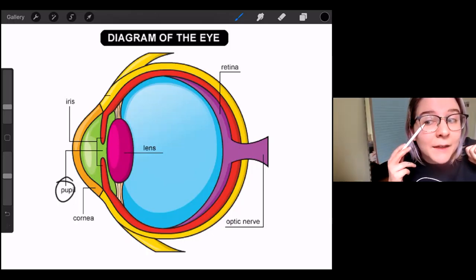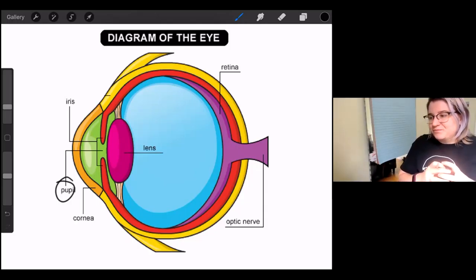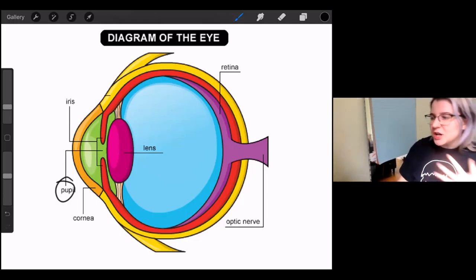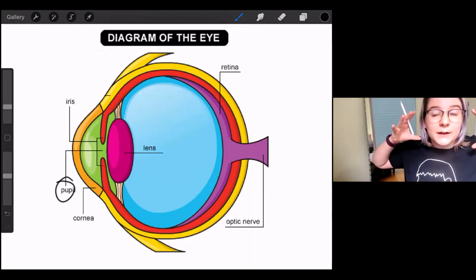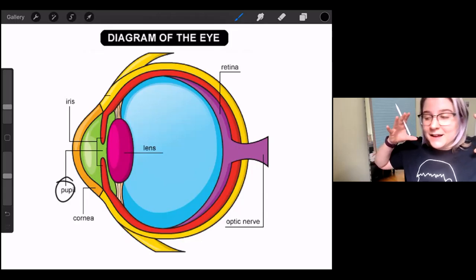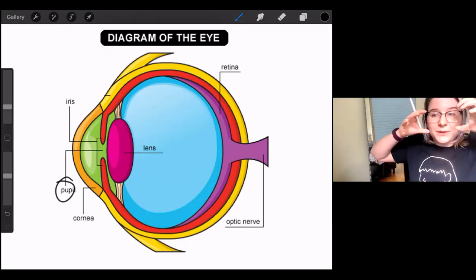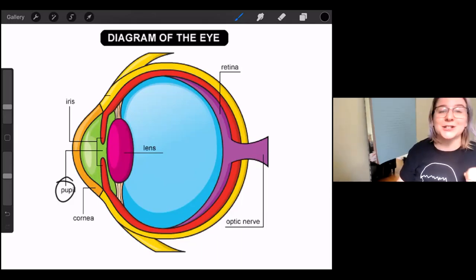Now the important thing to remember about the iris and the pupil is that the iris contracts and expands the pupil depending on how much light it's taking in. So if you are in a darker environment, then the iris is going to expand your pupil and make it really big so that there can be more light let in. And if you're in a really bright environment, your pupil is going to get really small so that your eye isn't damaged by too much light.